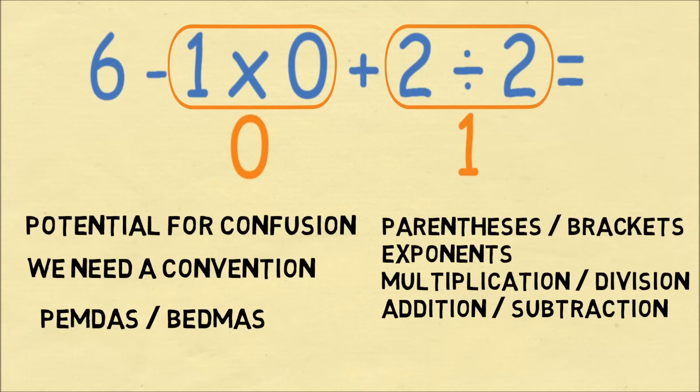And finally, we go left to right. So 6 minus 0 plus 1 is equal to 7. So the correct answer to this expression is 7, and that's what we got in Wolfram Alpha and Google. And they got the correct answer because they do follow the order of operations.